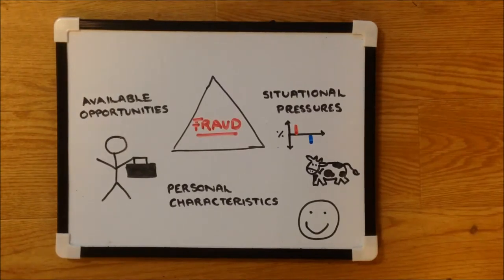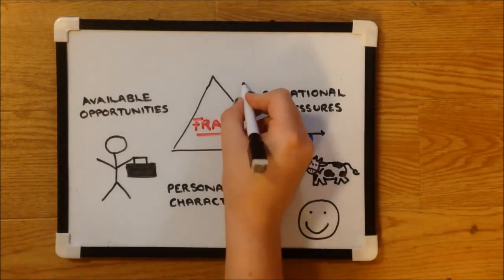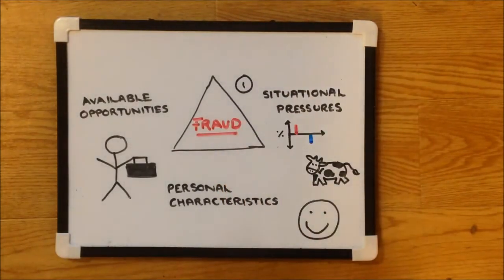So how did it happen? Here is the fraud triangle. It shows the prerequisites of a fraud. The first prerequisite is situational pressures. In the case of Tesco, there were three main pressures to inflate profit.